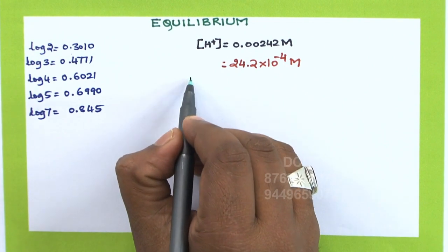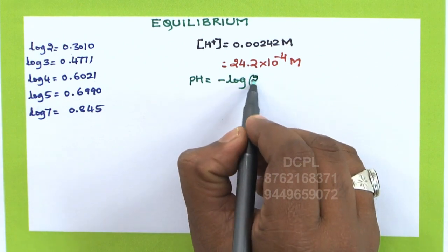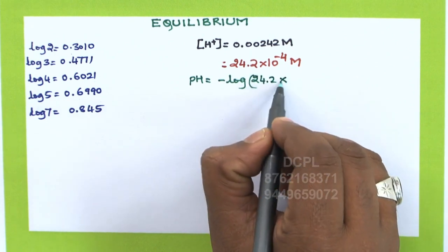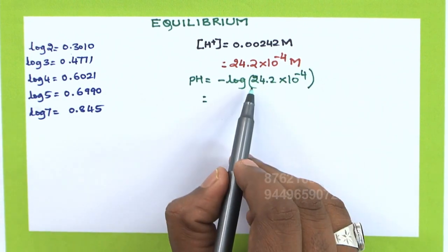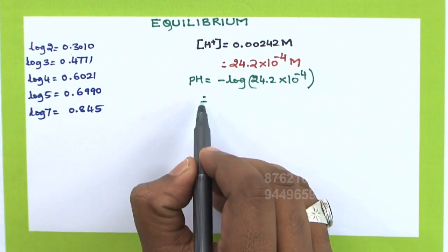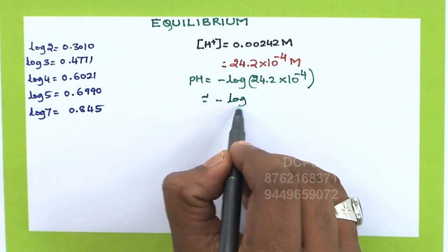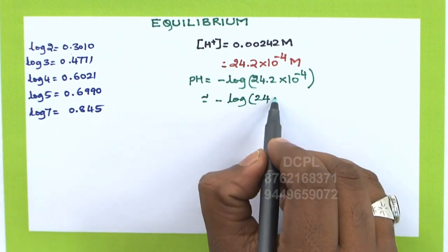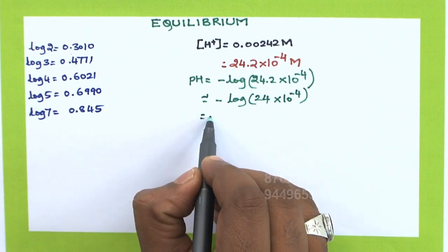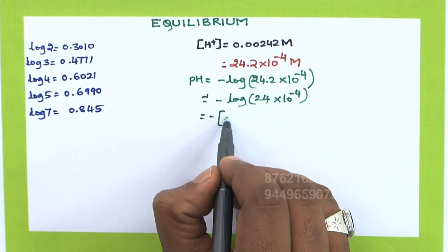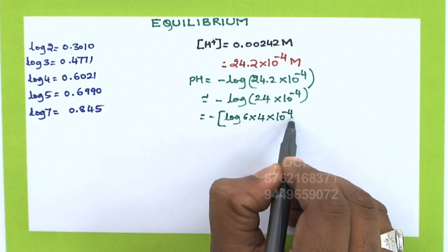We are supposed to calculate the pH. pH = −log[H+] = −log(24.2 × 10⁻⁴). You cannot calculate exactly with 24.2, so we approximate 24.2 ≈ 24. We will calculate the pH of 24 × 10⁻⁴. That is equal to −log(24), and 24 can be written as 6 × 4, so it becomes −log(6 × 4 × 10⁻⁴).